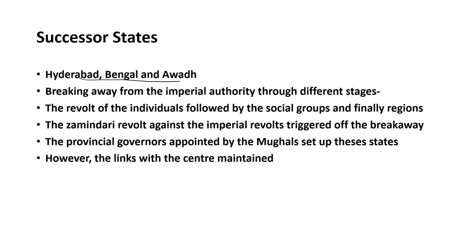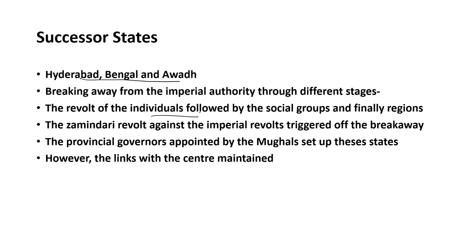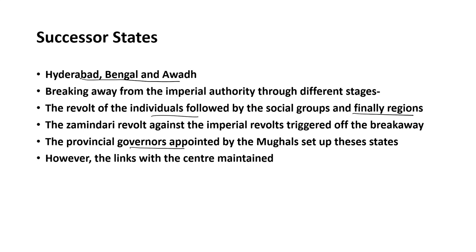All these states had earlier been part of the Mughal Empire. They delinked from the imperial authority through different stages — first the revolt of individuals, followed by social groups, and finally by regions — triggering the breaking away from the Mughals. The provincial governors appointed by the Mughals set up these states, but for a certain period of time, the link with imperial authority was maintained.